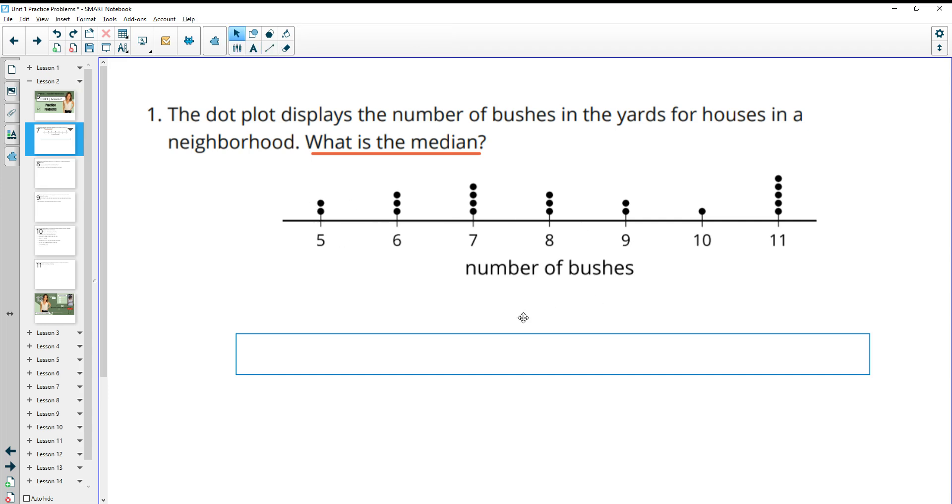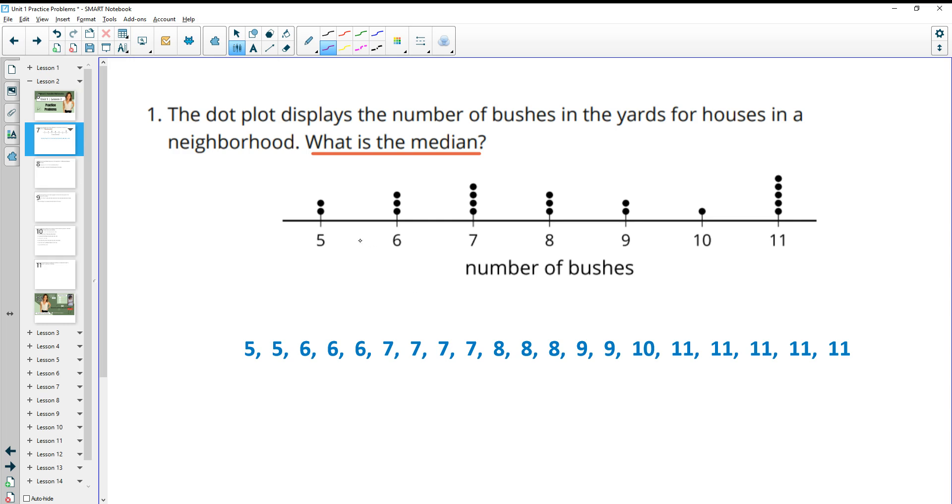So one thing you can do is rewrite all of these numbers in order from least to greatest like this and then work to the middle. The other thing you can do is count up the numbers, so count up the number of dots: 1, 2, 3, 4, 5, 6, 7, 8, 9, 10, 11, 12, 13, 14, 15, 16, 17, 18, 19, 20. So then you can think about the middle of 20 would be 10, right? So we would have 10 data down here and 10 data here and then the middle of that is going to be the median.